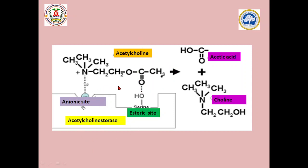This acetylcholinesterase enzyme has two specific sites: an ionic site and the esteric site. Acetylcholine chemically binds with both the anionic site as well as the esteric site, and tends to produce acetic acid and choline on rapid hydrolysis. This complex has a greater tendency to undergo hydrolysis within less than a fraction of a millisecond.